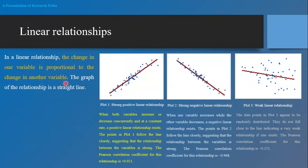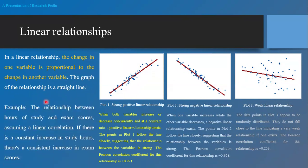The graph of a linear relationship is a straight line — whether upward, downward, or a weak linear pattern. For example, the relationship between hours of study and exam scores assumes a linear correlation. The relationship might be a strong positive linear, strong negative linear, or weak linear relationship.